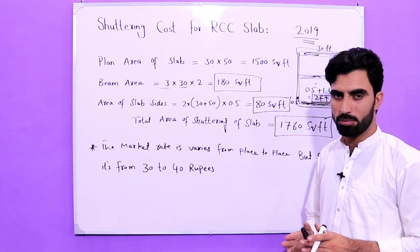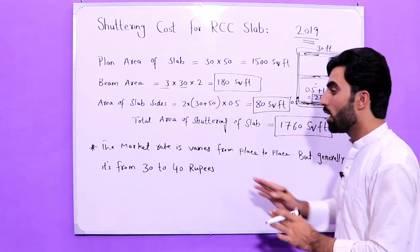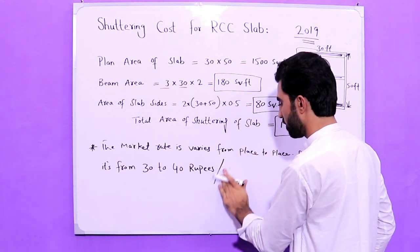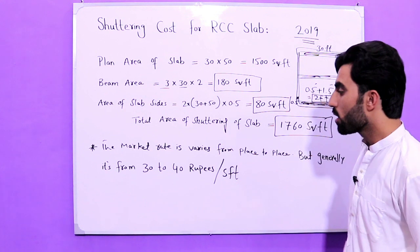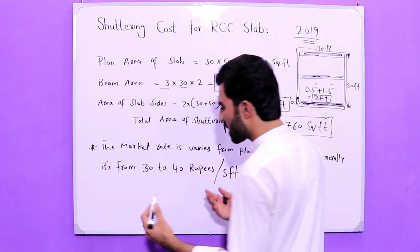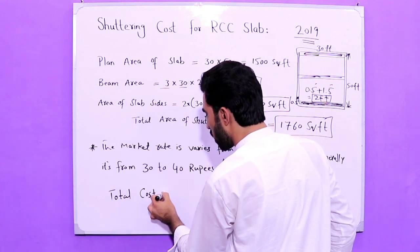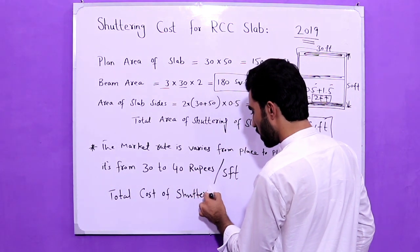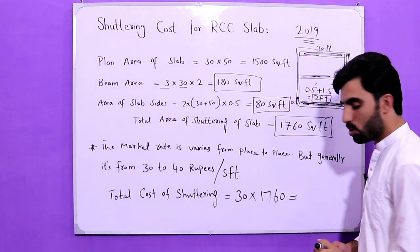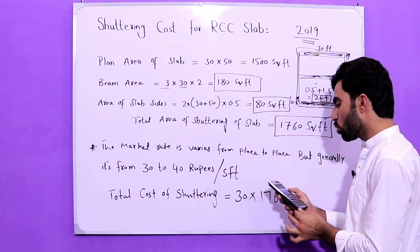What is the rate of shuttering? Because we have different places and different countries, the market rate varies, but generally it is from 30 to 40 rupees per square feet. So to find the total cost of shuttering for the RCC slab, I'll take 30 rupees as the rate. Total cost equals 30 multiplied by 1,760, which gives us 52,800 rupees.